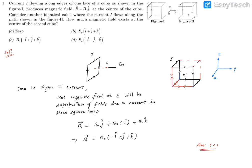Hello, here is question number 1. Let me read it. It reads: current I flowing along the axis of one face of a cube as shown in figure 1 produces magnetic field B0 J cap at the center of the cube. Consider another identical cube where current I flows along the path shown in figure 2. How much magnetic field exists at the center of the second cube?